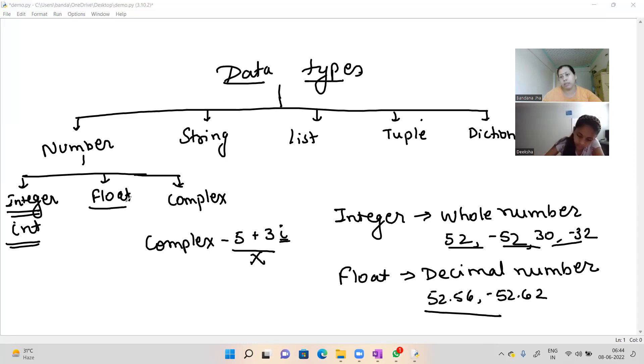Is this clear, Vita? Yeah. Now, string. What is string? Whatever we are writing in double inverted codes or single inverted codes, that comes under the category of string. Suppose if I have written, enter the number.